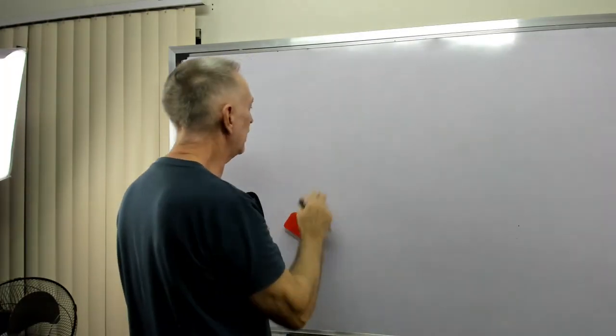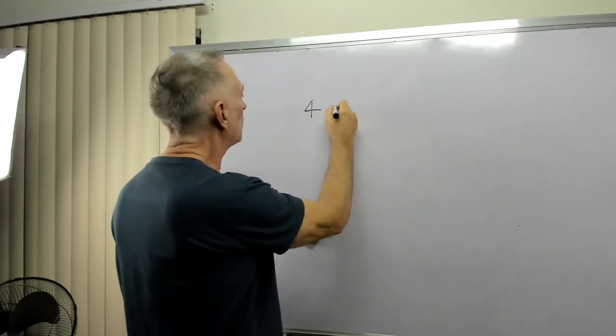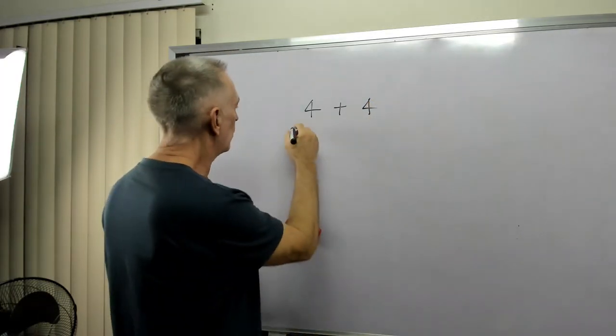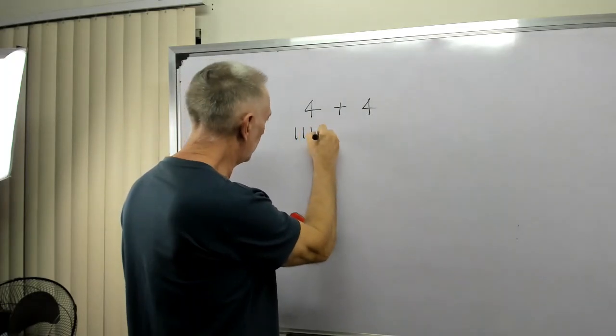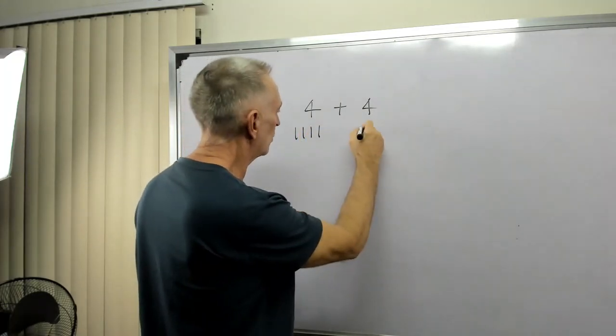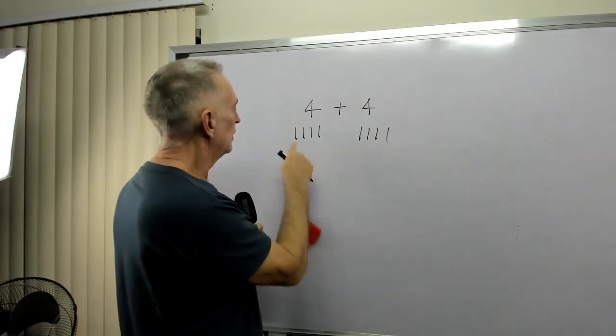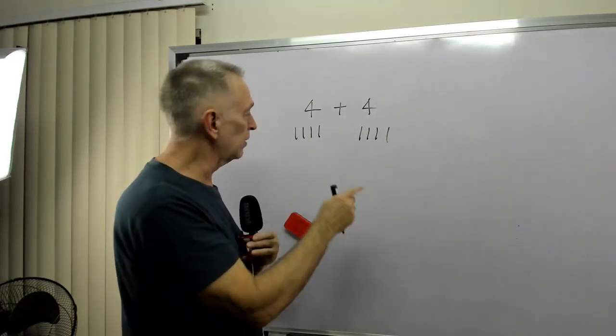Let's try another one. Four plus four. Four, okay, four, one, two, three, four. That's four fingers. One, two, three, four. Four fingers. Now, let's count the fingers.